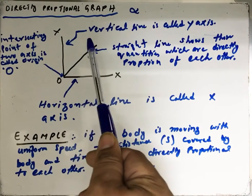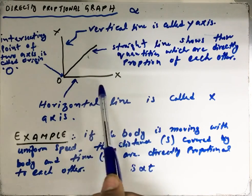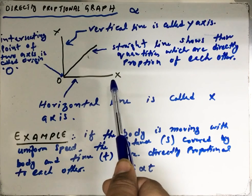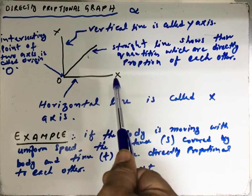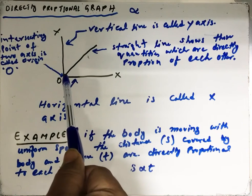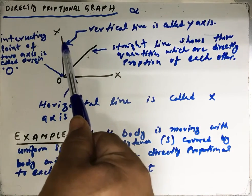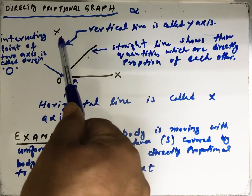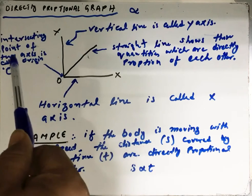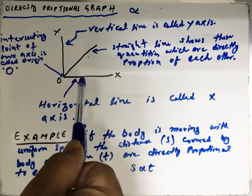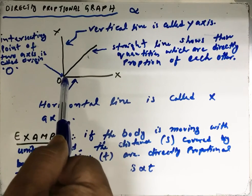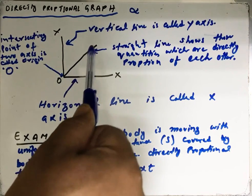In a directly proportional graph, the horizontal line is called the x-axis, denoted by x. The vertical line is called the y-axis, denoted by y. In between these two lines, we have this straight line.